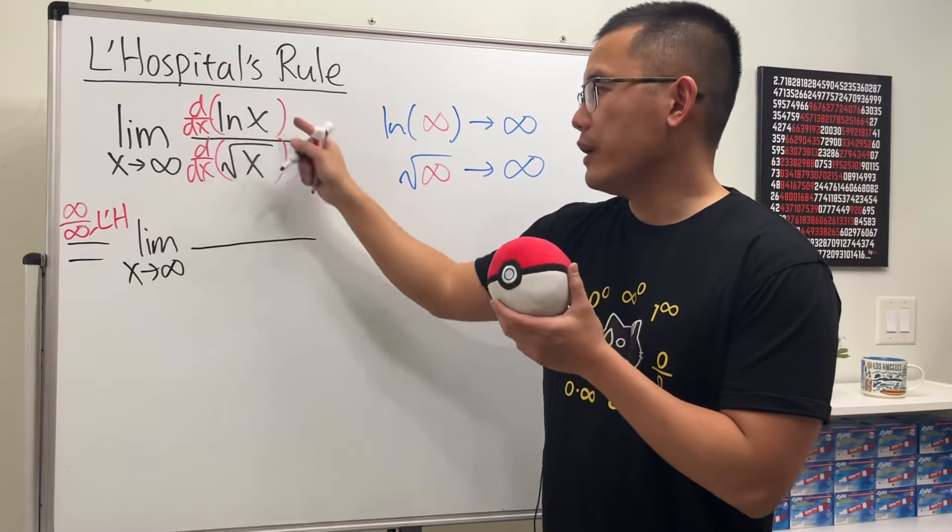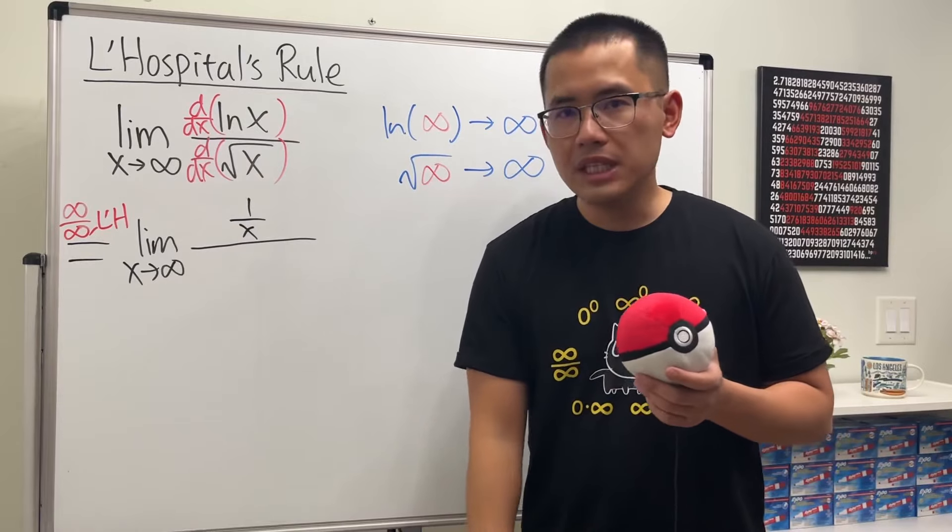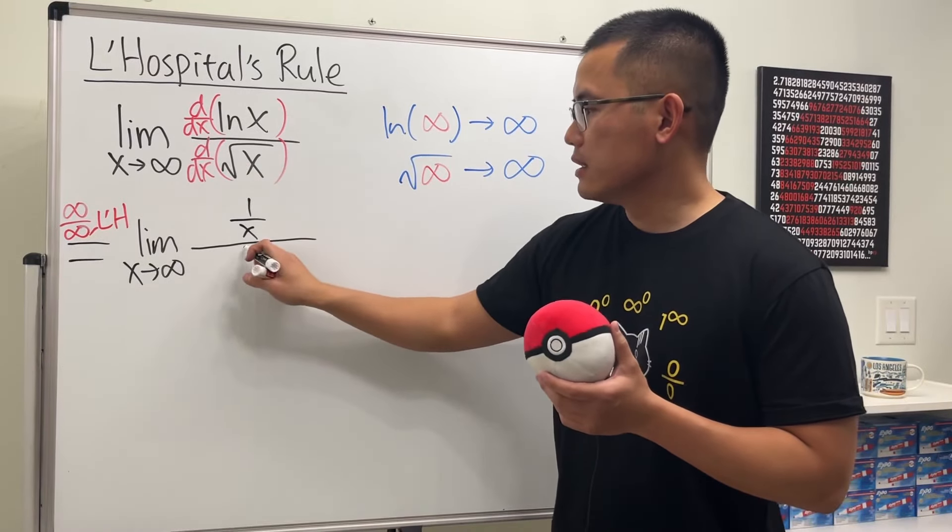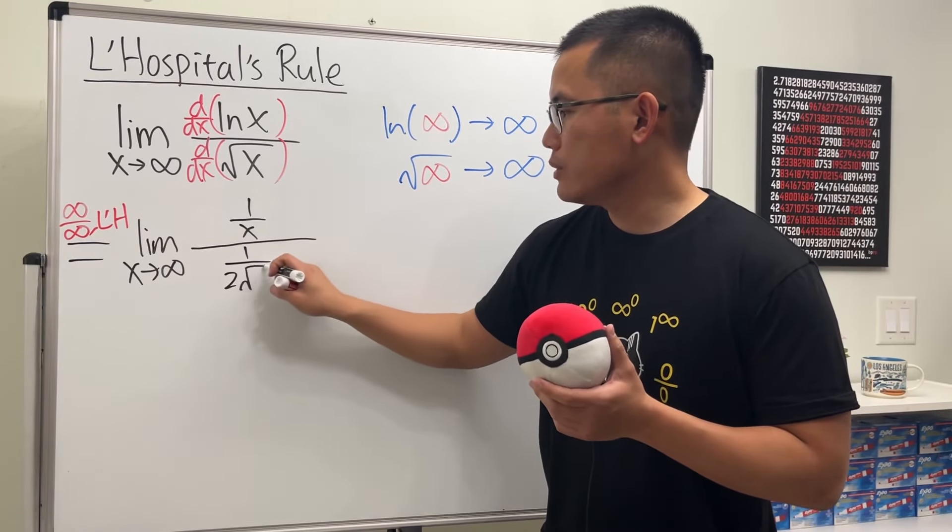The derivative of ln(x) is 1 over x, and the derivative of square root of x is 1 over 2 square root of x.